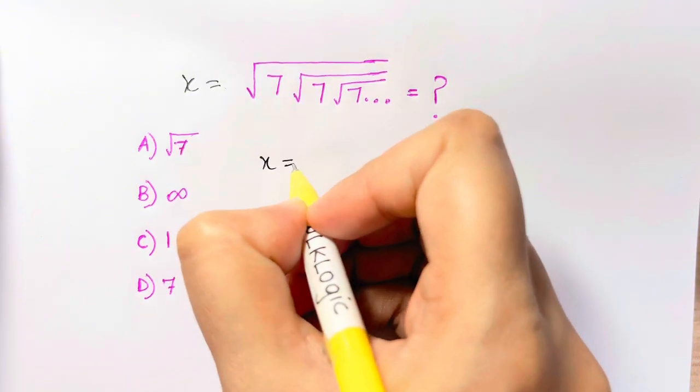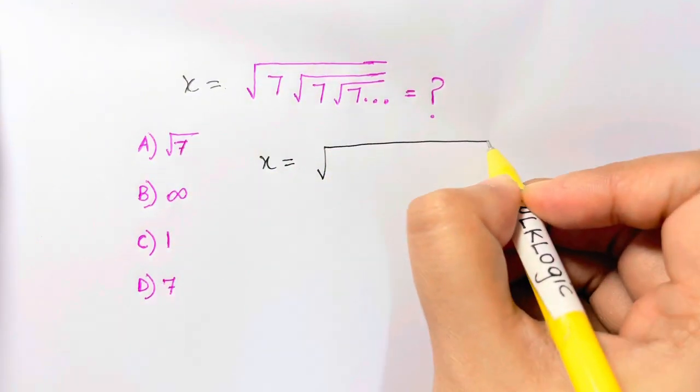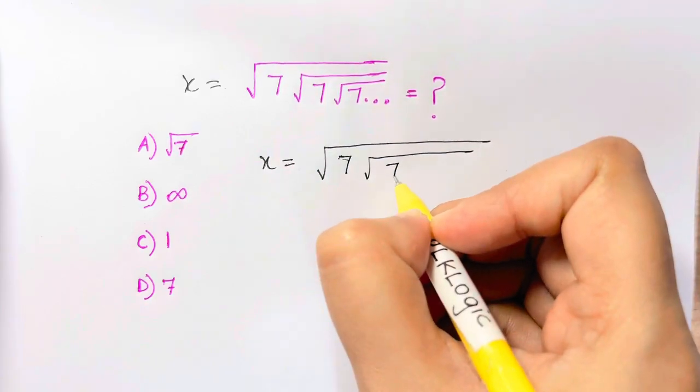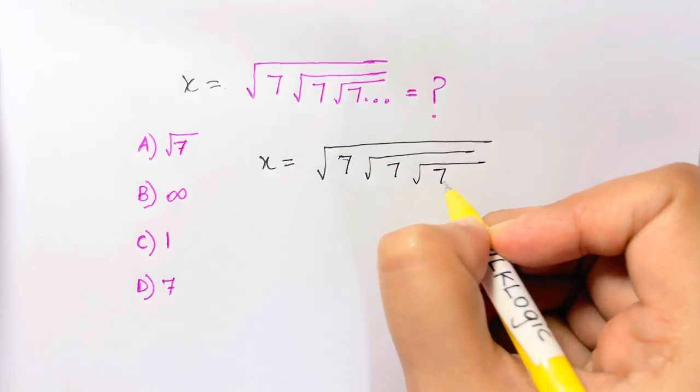Now let me write it down, x is equal to this whole term, isn't it? Square root of 7, square root of 7 and square root of 7 and so on.